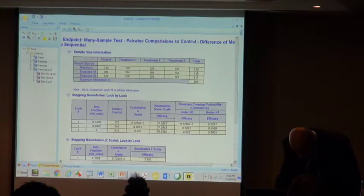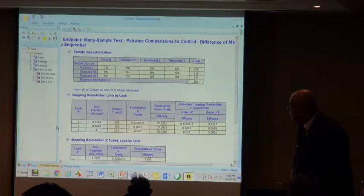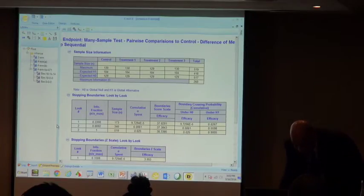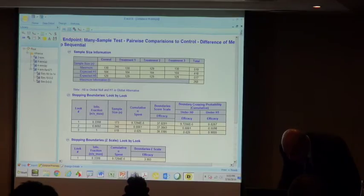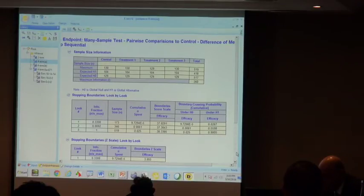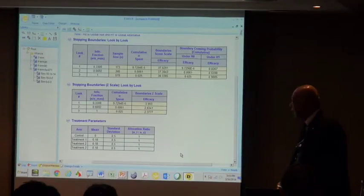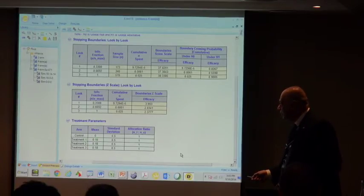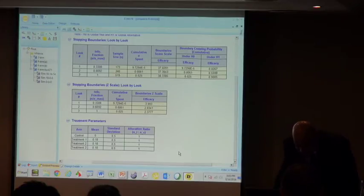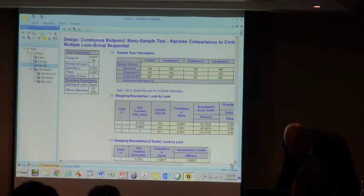It's interesting to look at the boundary for two arms compared to the boundary for four arms. But before doing that we can ask ourselves: I designed this trial for a difference of 0.18 on each of the three. What would have happened for instance if I had had only one arm active and the other two arms were not as effective? Supposing they had been only 0.18 and then 0.14 and 0.14.